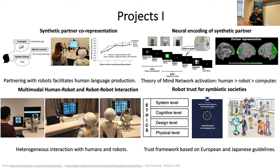In another study, we go one step further and assess the neural representation of different interaction partners: a human, a humanoid robot, and a computer tower. We created a simple game experiment where participants in the scanner interact with these three partners, and we recorded fMRI data. We found that the theory of mind network is activated for all agents, but with a ranking: it is most activated for humans, robots ranked second, and the computer tower ranked last.